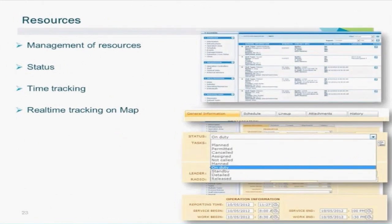The resources section of the application allows the administration and management of all resources within the system. Here it is easy to view all active resources, their current status, and any other details. Resources can be personnel, vehicles, teams, or people. The H2O Emergency Operations Center can also be linked to GPS systems to show real-time resource locations on the GIS display, providing even more real-time information and reducing the load on voice communications while an emergency is underway.